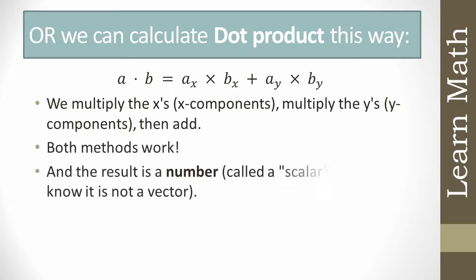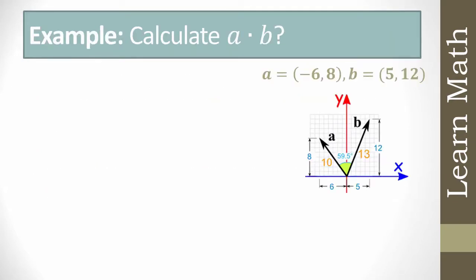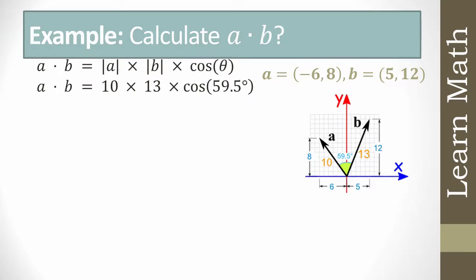For example, calculate a·b if vector a = (-6, 8) and vector b = (5, 12). To find a·b using the formula: a·b = |a||b|cosθ. The magnitude of a = 10 and magnitude of b = 13, and the angle is given as 59.5°. Substituting: a·b = 10 × 13 × cos(59.5°).